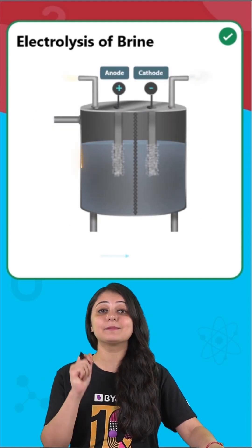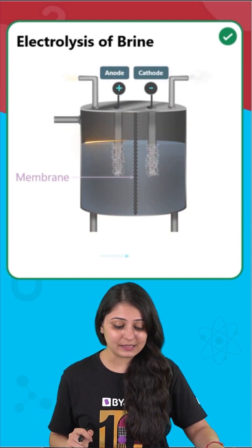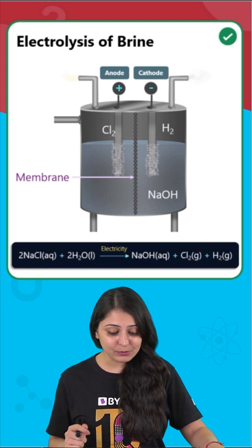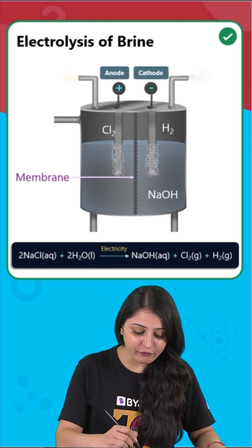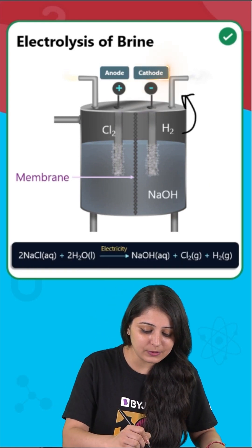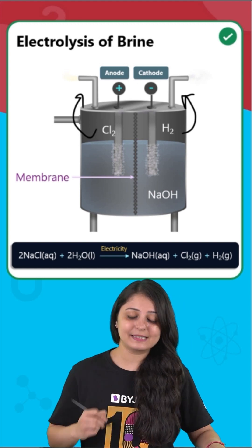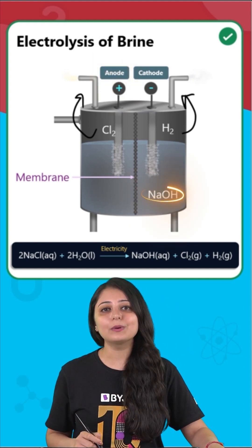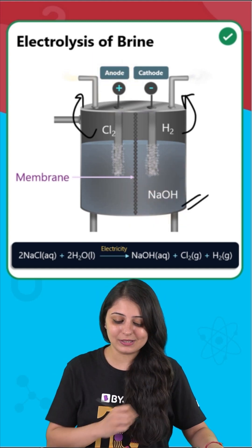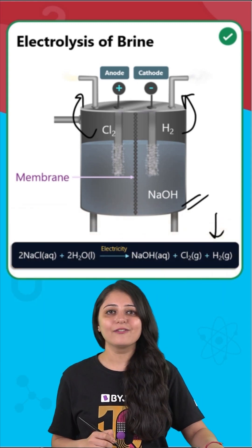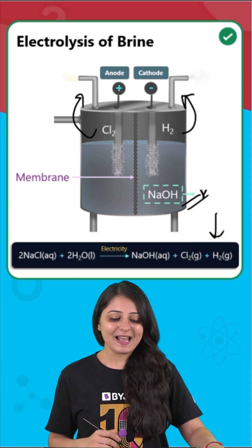And when electricity is passed through brine solution, it actually decomposes to form hydrogen at cathode, chlorine gas at anode, and sodium hydroxide near the cathode is also being formed — and this is the equation for the same.